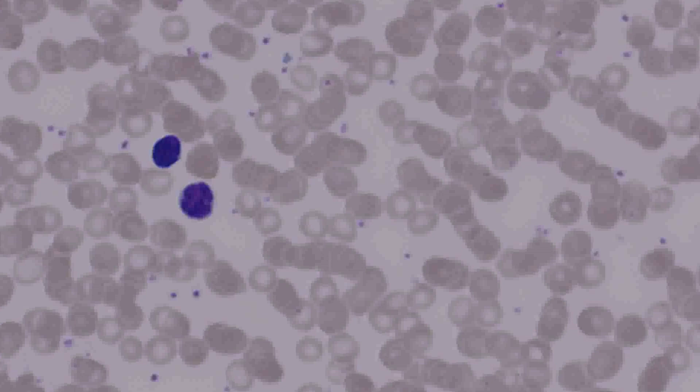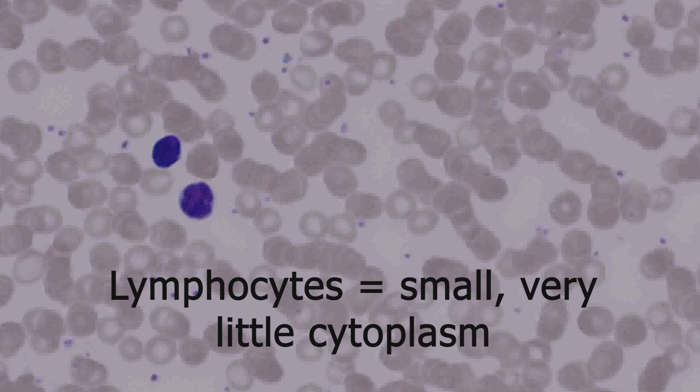Lymphocytes are small and they are almost all nucleus, with very little cytoplasm. My rule of thumb is that if you have a small cell that is 70% or more nucleus by volume, it's probably a lymphocyte.